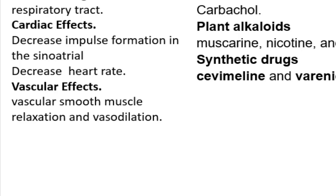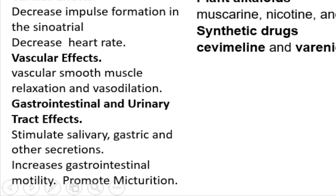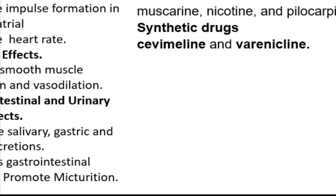Muscarinic receptor agonists stimulate salivary, gastric, and other secretions in the gastrointestinal tract. They also increase contraction of gastrointestinal smooth muscle, except sphincters, by stimulating the enteric nervous system located in the gut wall, increasing gastrointestinal motility. Muscarinic receptor agonists also stimulate the bladder detrusor muscle and relax the internal sphincter of the bladder, promoting emptying of the bladder (micturition). Higher doses of these agonists can therefore produce excessive salivation and cause diarrhea, intestinal cramps, and urinary incontinence — the 'all-faucets-turned-on' syndrome.